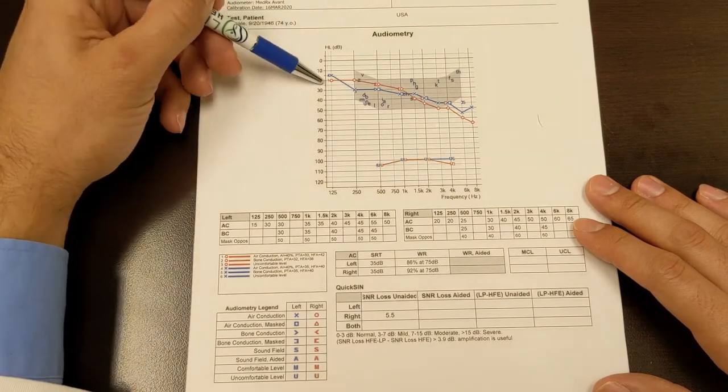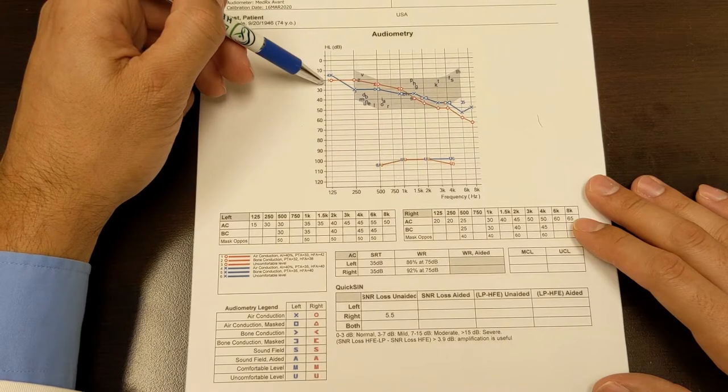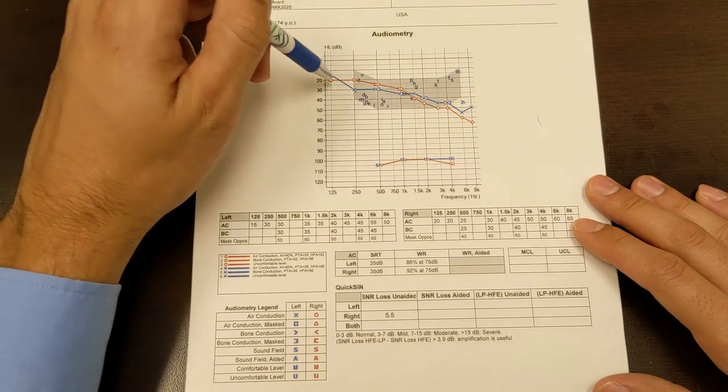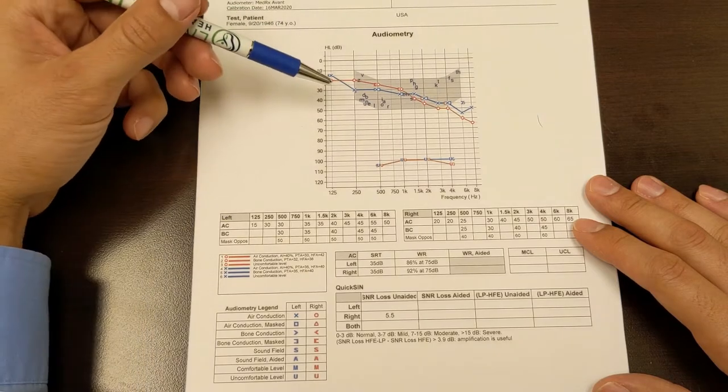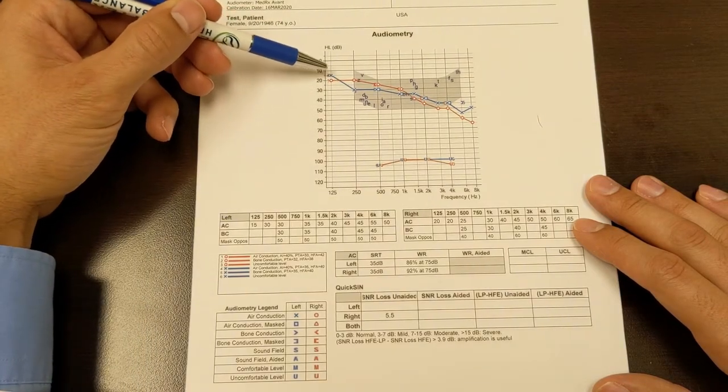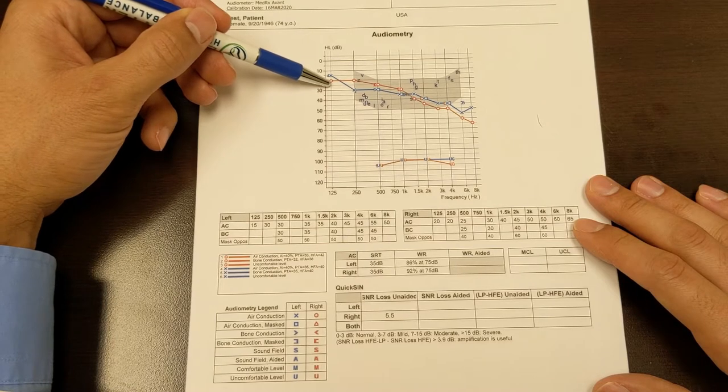And they're recorded in two colors. Red represents right side and blue represents left side. So you can see if this were printed in black and white, you'd still be able to tell which one's which because the X's represent the left side and the O's represent the right side.